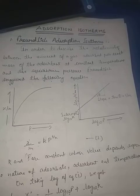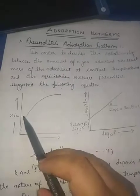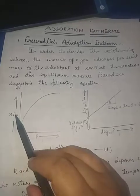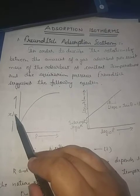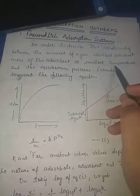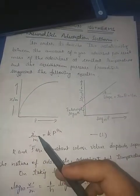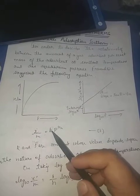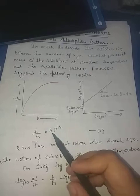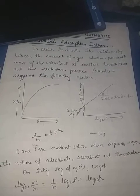Today we will study the Freundlich adsorption isotherm. To describe the relationship between the amount of gas adsorbed and mass of the adsorbent, X by M, and P — isotherm means at constant temperature — he suggested the equation: X/M = K·P^(1/N). This was the equation given by Freundlich to explain the adsorption process.